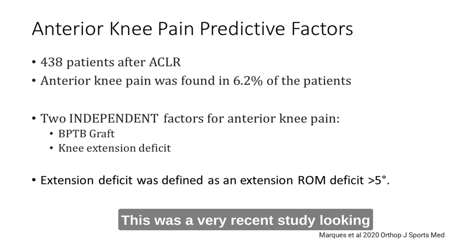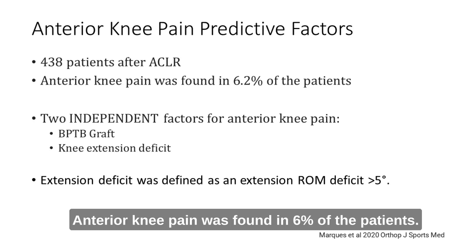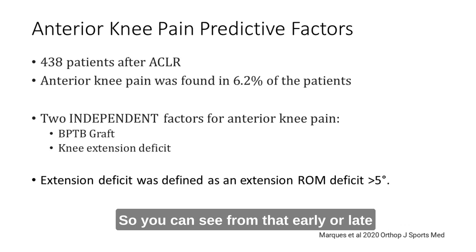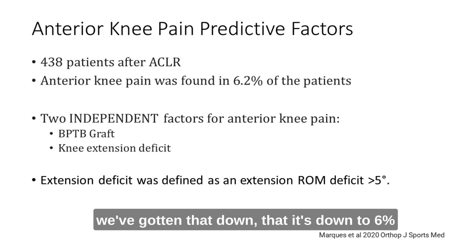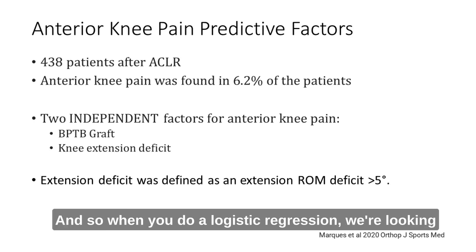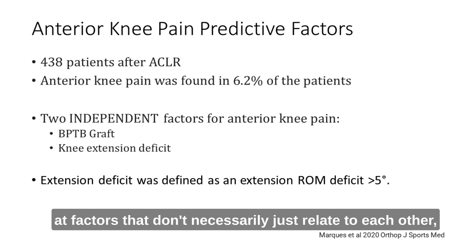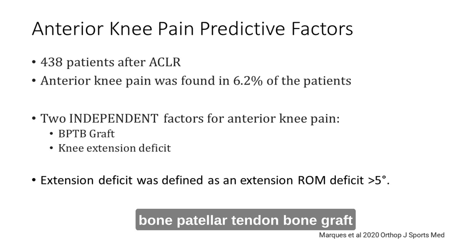This was a very recent study looking at anterior knee pain predictive factors — about 438 ACL reconstructions. Anterior knee pain was found in 6% of the patients. So from the late eighties where everybody had anterior knee pain, at least we've gotten that down to 6%. There are two independent factors when you do logistic regression — factors that are risk factors in and of themselves: bone patellar tendon bone graft, and knee extension deficit.